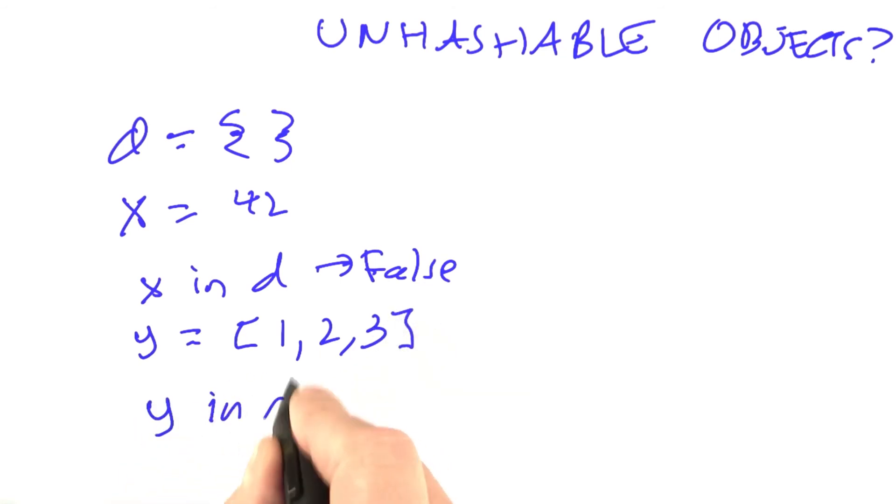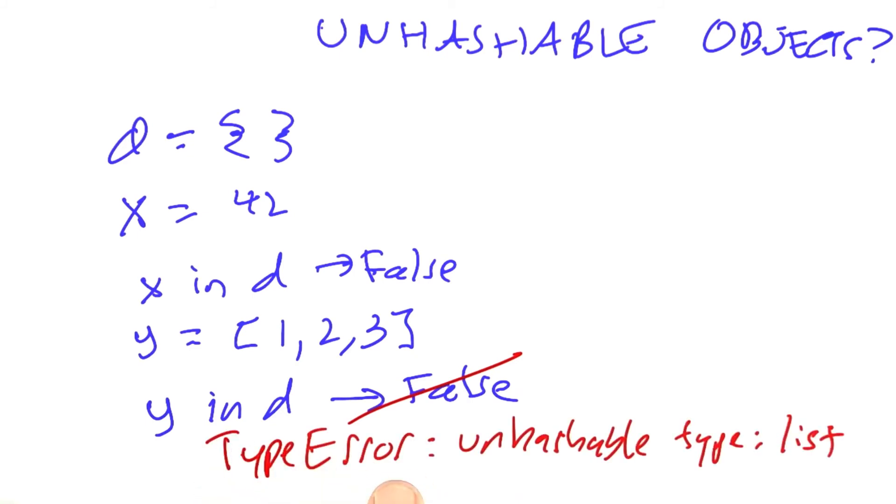Now if I ask, is y in d? You'd think that that would tell me false, but in fact it doesn't. Instead, it gives me an error, and what it's going to tell me is TypeError, unhashable type list. What does that mean?